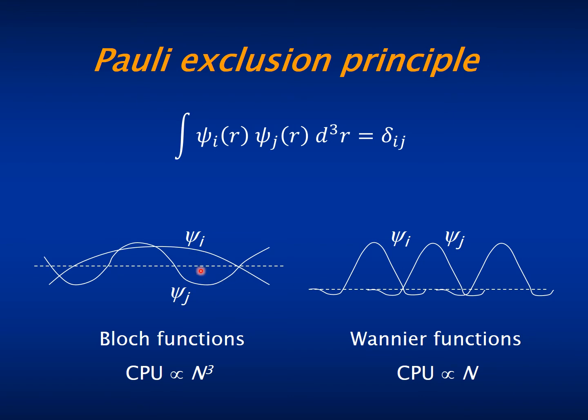One can perform a unitary transformation of them to make them as localized as possible, and these are called the Wannier functions.